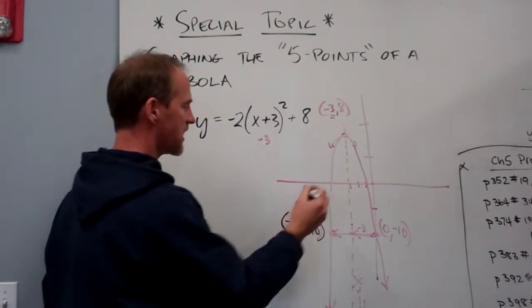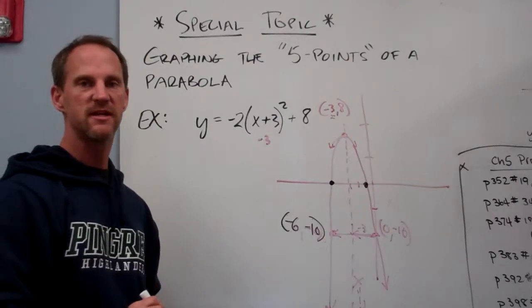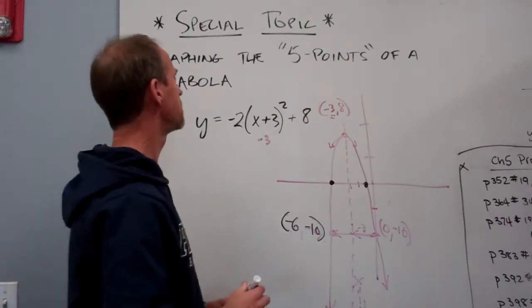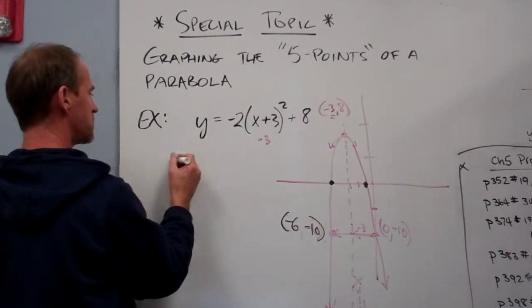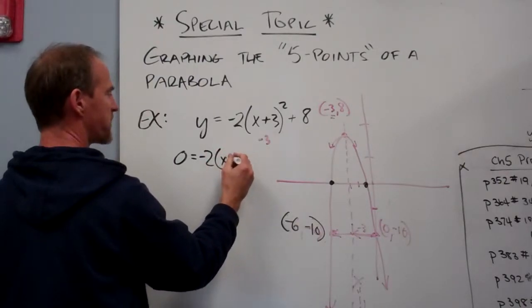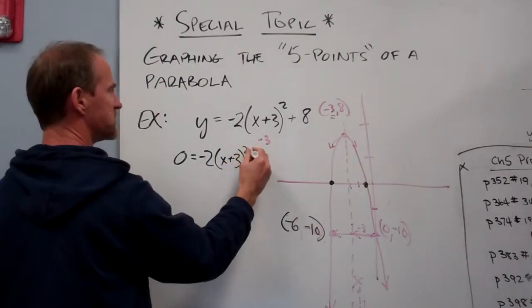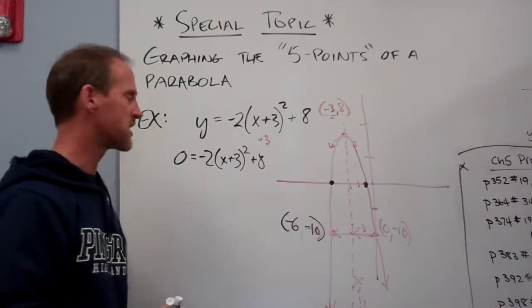My other two key points are these points right here, the intercepts. Like we did in section 4-3, we are going to say when is this equal to 0. So if I just set this equal to 0, 0 is equal to negative 2 in the parentheses x plus 3 squared plus 8. Now I'm just going to go through and extract the square roots like we did in that section.